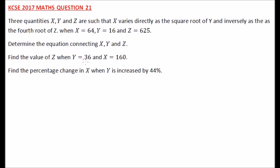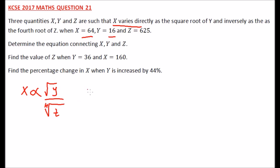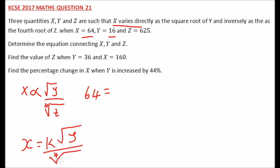To get that equation, we need first of all to write this statement in a formula. That is, x varies directly as the square root of y, and inversely means divide by the fourth root of z. We need to write x is equal to k times the square root of y divided by the fourth root of z.